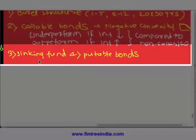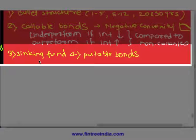What is a sinking fund? You issue a bond with, say, a par value of 10 million and maintain a sinking fund — so every year you call back, say, 2 million on a pre-specified schedule. And then there are also putable bonds.